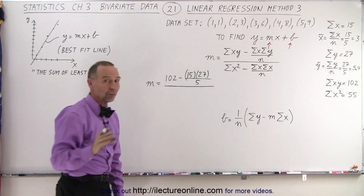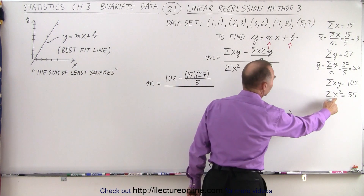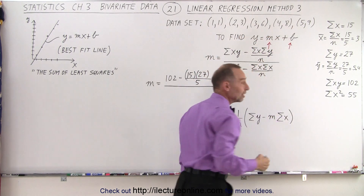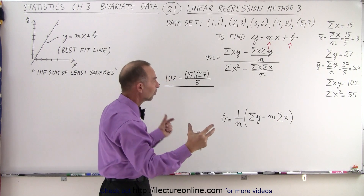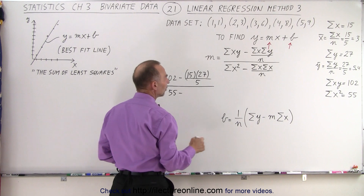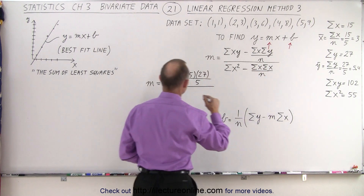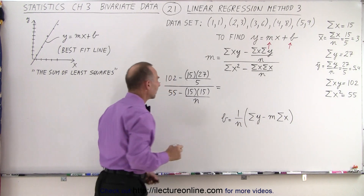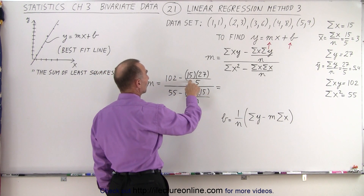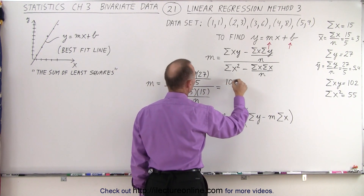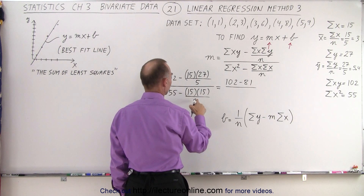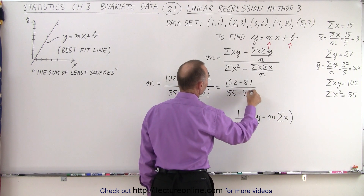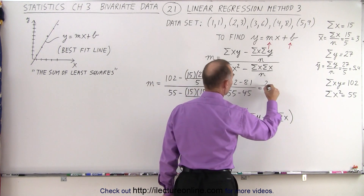And the whole thing is divided by the sum of all the x's squared. I did that in advance — it's 55. So we take 1 plus 4 plus 9 plus 16 plus 25: we take each x value, square it, and sum it all together. That gives us 55, minus the sum of all the x's times the sum of all the x's, which is 15 times 15, divided by the number of data points. Simplifying: 15 divided by 5 is 3; 3 times 27 is 81. So we get 102 minus 81, all divided by 55 minus 45 — which is 3 times 15. That equals 21 divided by 10, which is 2.1.